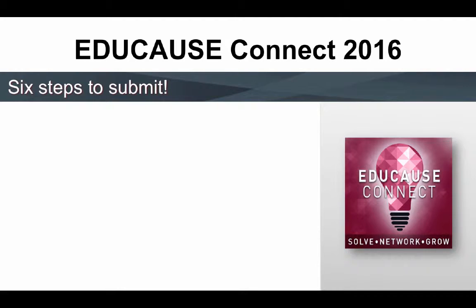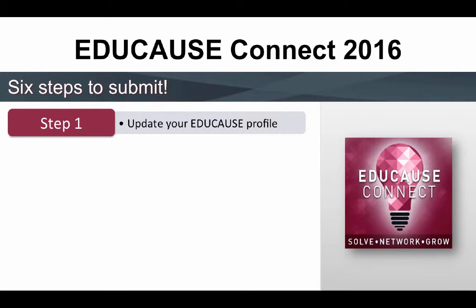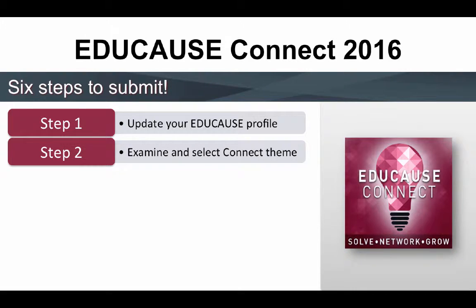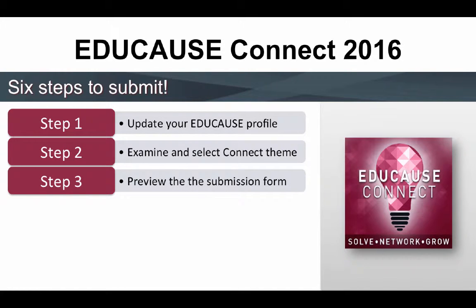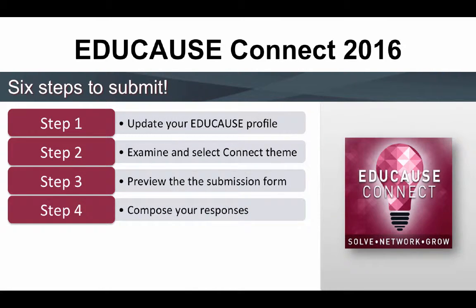Here is a quick review of the call for proposal process. First, update your Educause profile — the information there is critical to the proposal review committee. Step two, take some time to review the descriptions of the four themes before making your choice. Step three, preview the submission form to help you craft a proposal that works well with the Connect concept. Step four, compose your response using a word application tool first. The online form requires you to complete it in a single session and can time out without saving your entries if you are writing for an extended amount of time.